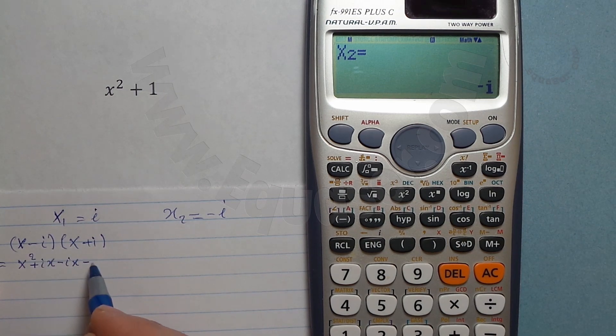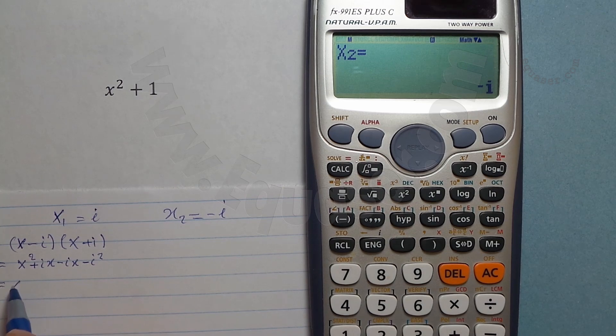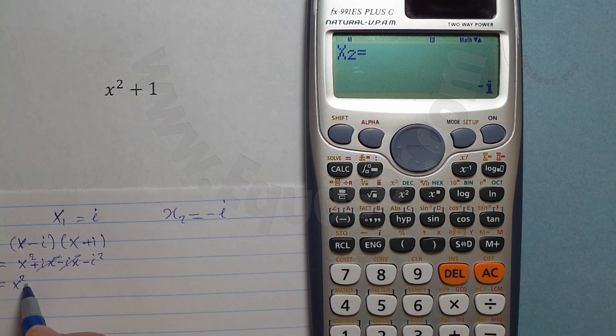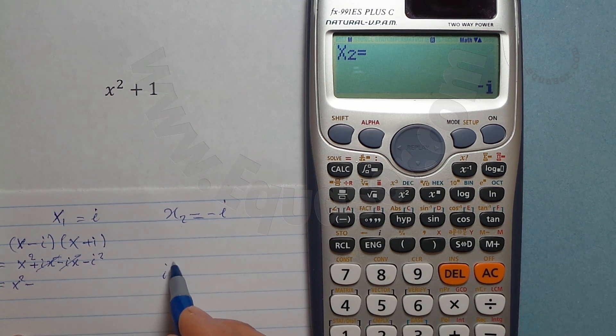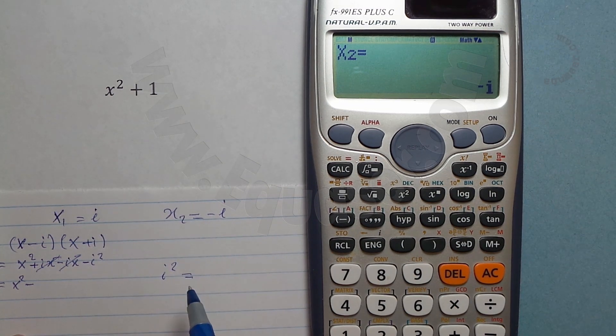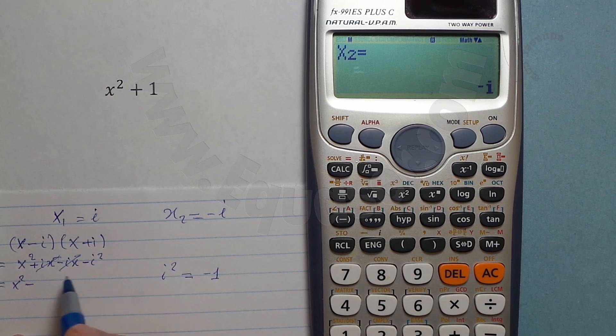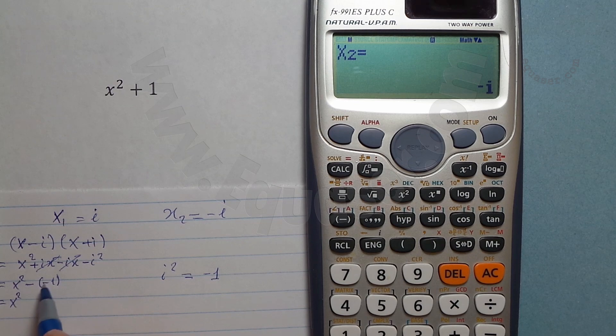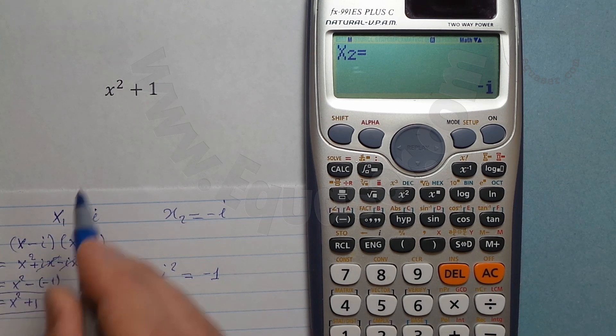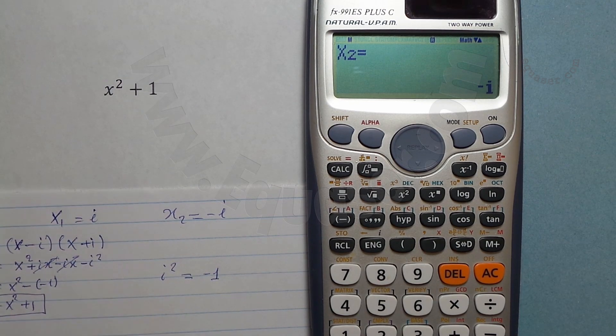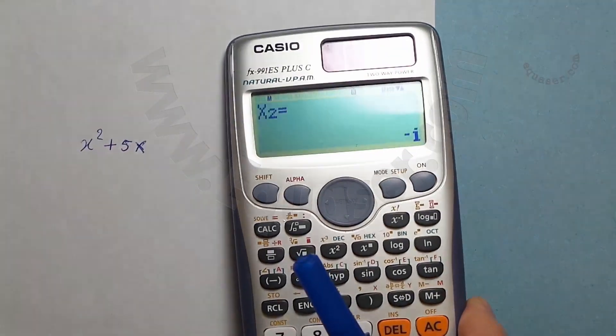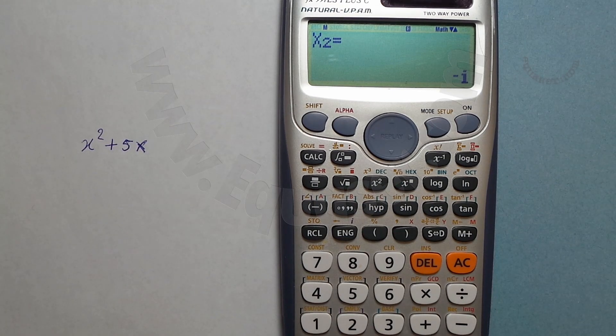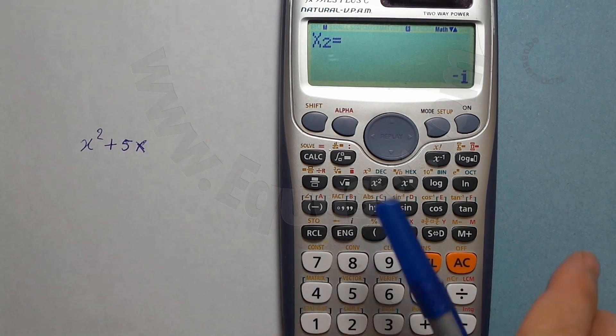To expand it, x times x is x squared, we have plus ix and then we have minus ix. Minus times plus is minus, and then we have i squared. So x squared, this goes with this, and then we have minus. We know that i squared is equal minus 1.